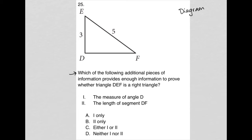So the question says, which of the following additional pieces of information provides enough information to prove whether triangle DEF is a right triangle? Okay.